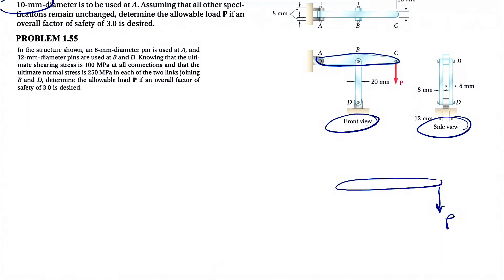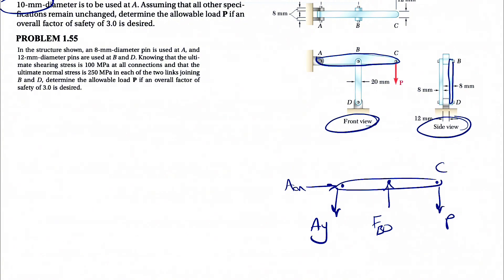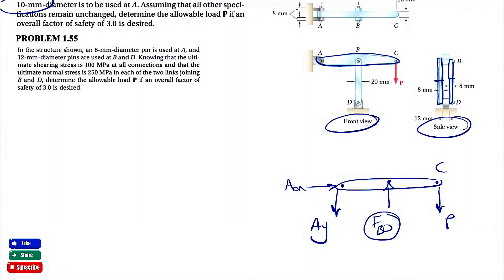We have force P applying at point C, a force FBD at point B, and since we have a pin at point A, we have two force components: AX and AY. Looking at the top and side views, member BD actually consists of two members, but we consider one force FBD as the resultant of these two. When using the stress formula, we must keep in mind that we're dealing with the area of both members.